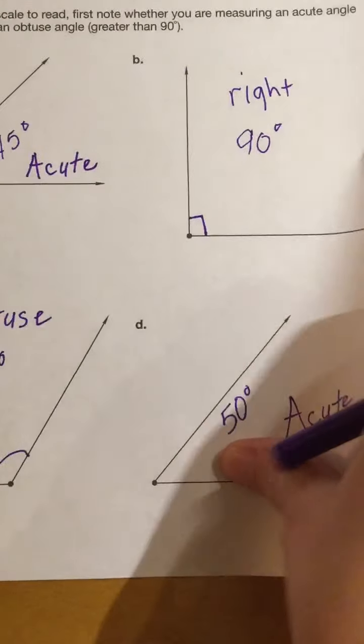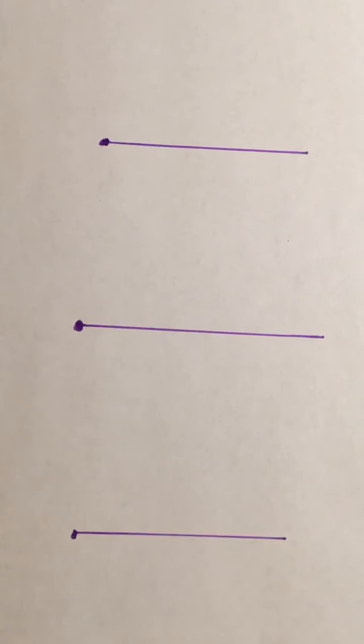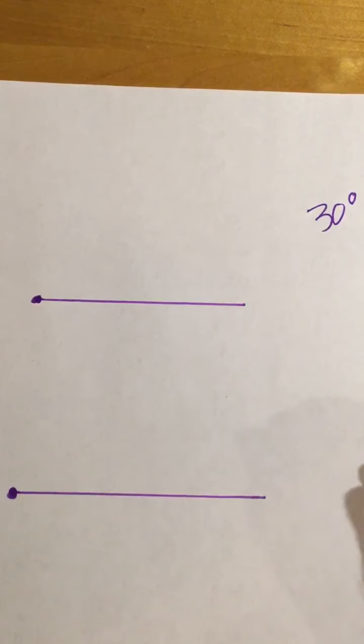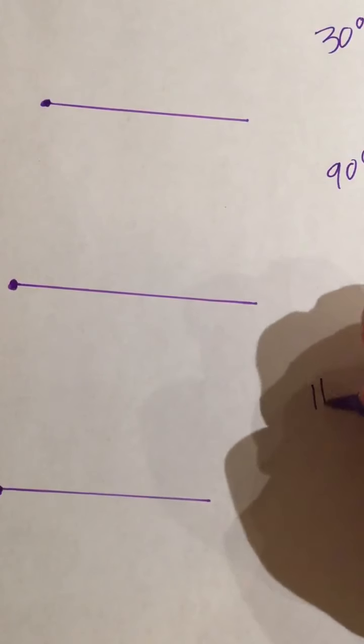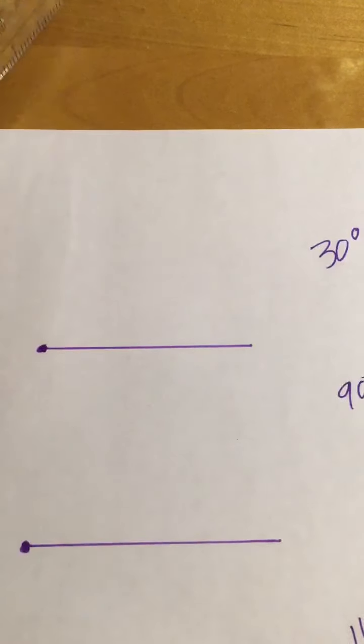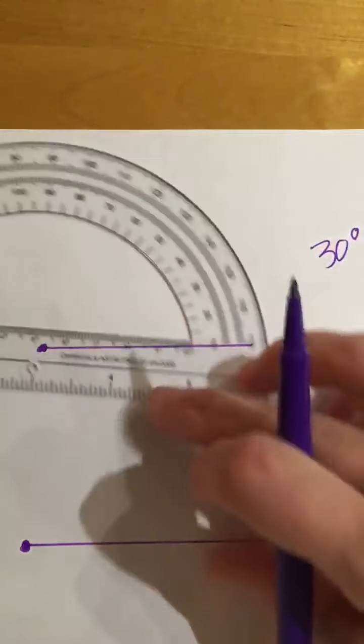That is the first part — measuring angles. Now I'm going to draw a couple of angles. In our book it tells us to draw a 30 degree angle, then a 90 degree angle, and then a 110 degree angle. I'm just going to do the first three as a demonstration.